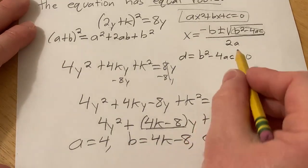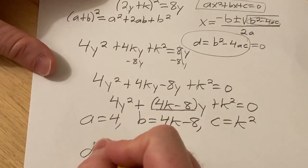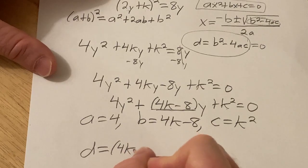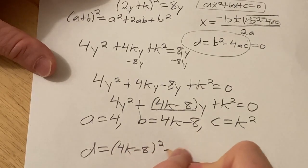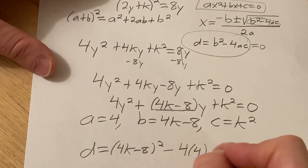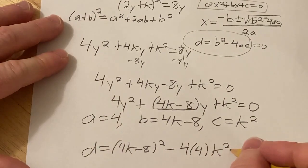So now we'll work out the discriminant, which is here, and we'll set it equal to 0. So d equals b², so (4k - 8)², minus 4ac, so 4 times 4, because a is 4, and then k². We want this to be equal to 0.